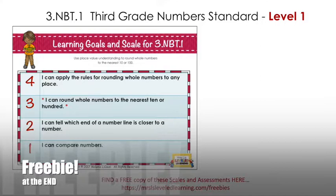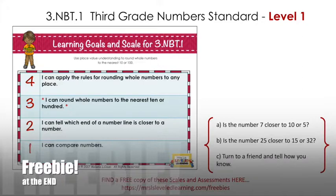When I introduce this standard, I show students the levels of the scale and I always start at the bottom, number one, and work up through four. One and two help students access their background knowledge — anything they learned about whole numbers and how to compare numbers — that would help them understand rounding, which is the third grade expectation at level three. Level four is for advanced students who need a challenge or students who've already mastered the grade level expectation.